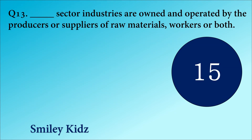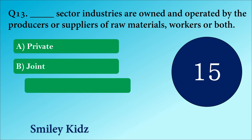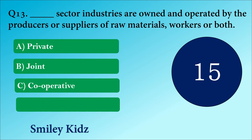Question number 13. Dash sector industries are owned and operated by the producers or suppliers of raw materials, workers or both. The options are A. Private, B. Joint, C. Cooperative or D. Public.